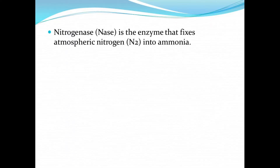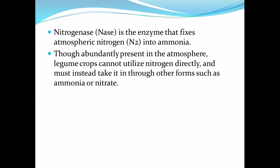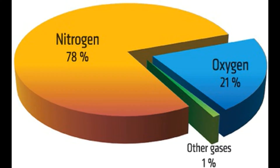Nitrogenase is the enzyme that fixes atmospheric nitrogen into ammonia. Though nitrogen is abundantly present in the atmosphere, legume crops cannot utilize nitrogen directly and must instead take it in other forms such as ammonia or nitrate. About 78% of the atmosphere is made up of nitrogen.